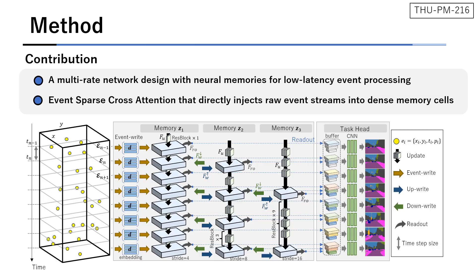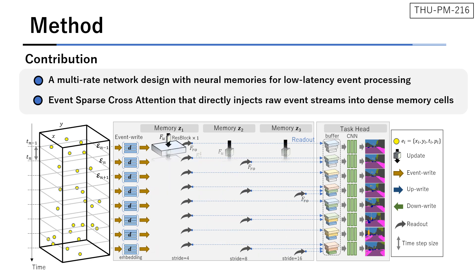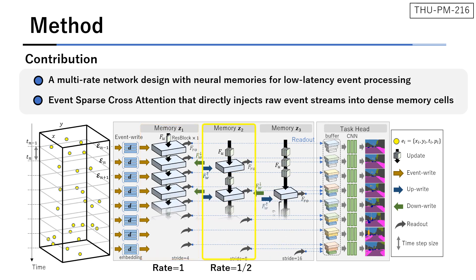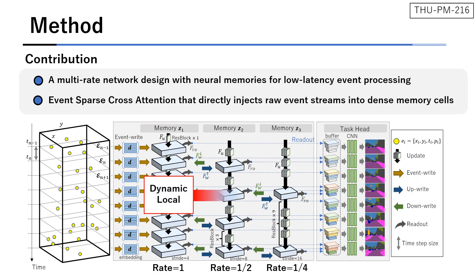We achieve such low latency processing using three neural memories operating at different rates. The multi-rate design enables the network to encode scene contents at a proper temporal scale, which significantly reduces computational overhead.